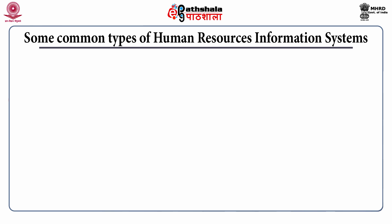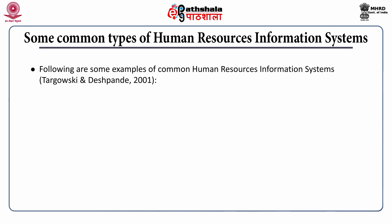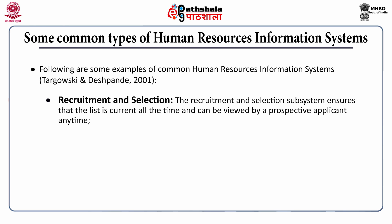Let us understand the common types of Human Resource Information System. There are some examples of common HRIS as per Tagovsky and Deshpande, who proposed this framework in the year 2001. Recruitment and selection: the recruitment and selection subsystem ensures that the job list is current at all times and can be viewed by a prospective applicant anytime. It generates various statistics like jobs with high turnover and the average time it takes to fill a vacancy, and tests and evaluates the candidate's personality, knowledge and skills at different company locations.